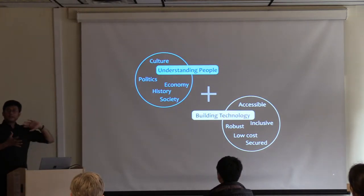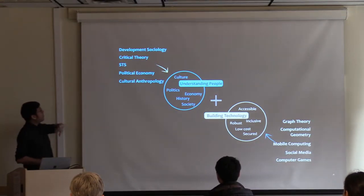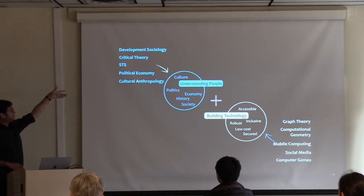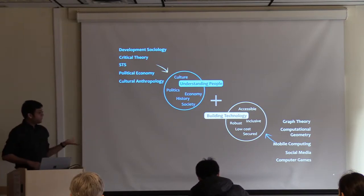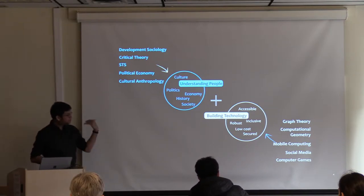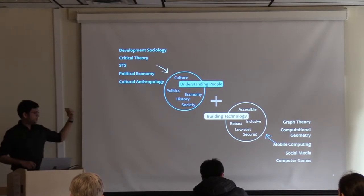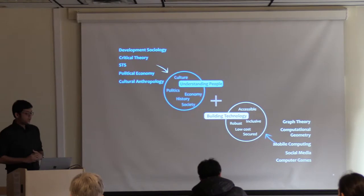My research is a combination of understanding people and building technologies. For understanding people, I borrow theories from development sociology, critical theory, science and technology studies, political economy, and cultural anthropology. On the technical side, I draw from graph theory, computational geometry, mobile computing, social network analysis, social media analysis, and computer games. In short, I call my research a combination of ethnography — understanding people — and computing.